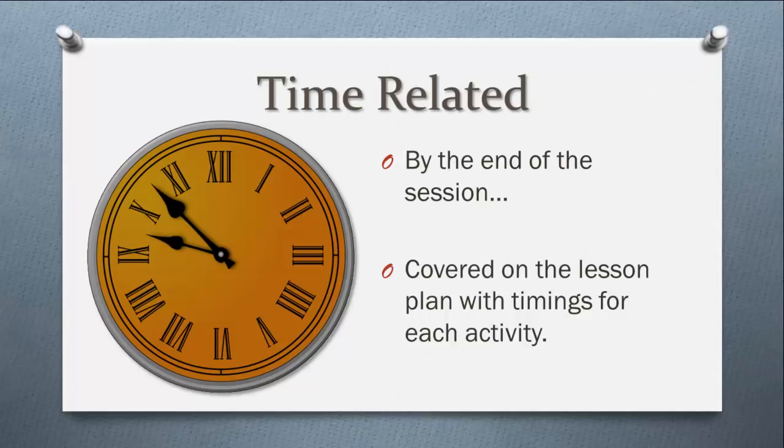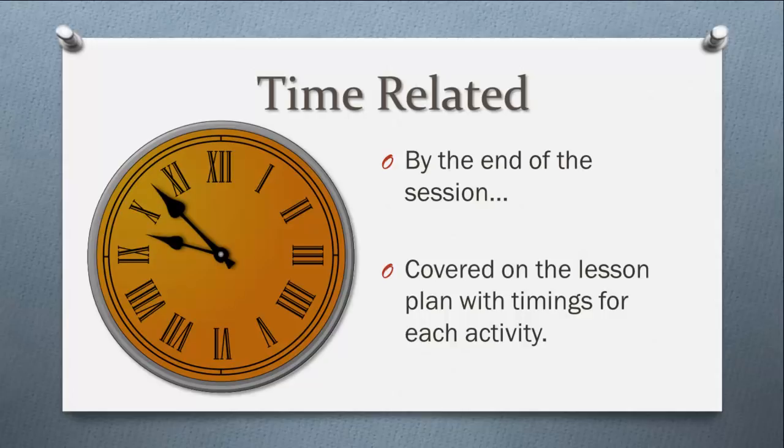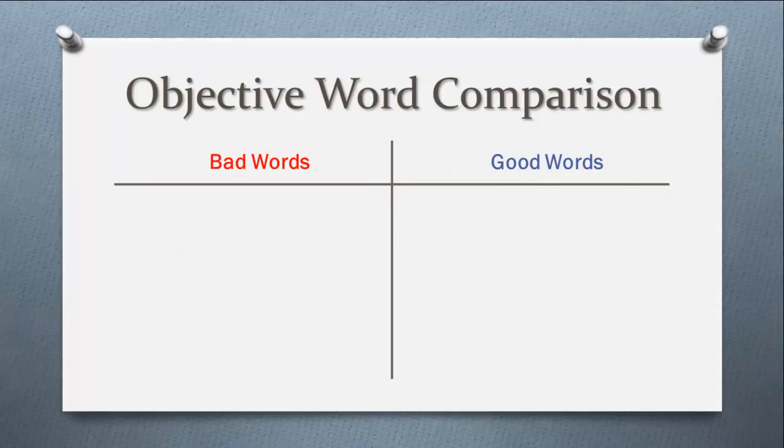So let's have a look at the type of words you should and shouldn't be using. Words like understand, know, feel, appreciate, show an awareness of, and students will learn are not good in objectives. This is because they are not measurable. If you take understand, for example, students would need to do something else to show that they have understood. It is that thing that they do that you need to be writing in your objectives.